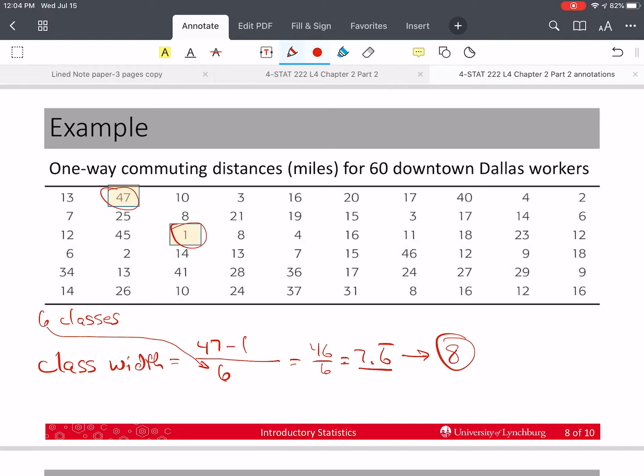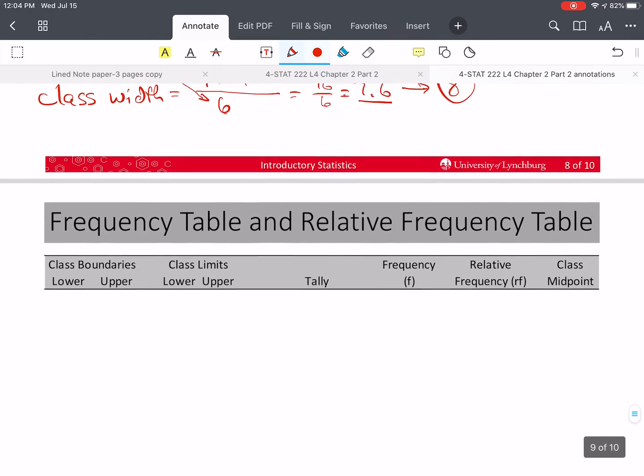So this is going to go to eight. So even if I had gotten seven, a whole number, I would still increase it to eight. Otherwise, I'll end up with more than six classes. So you don't want that.